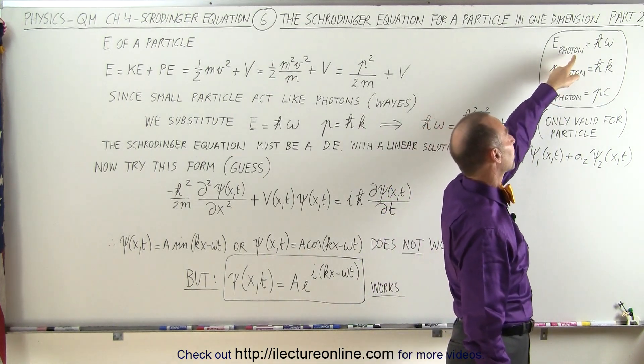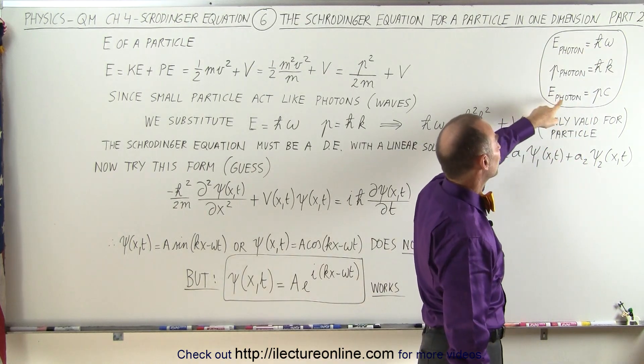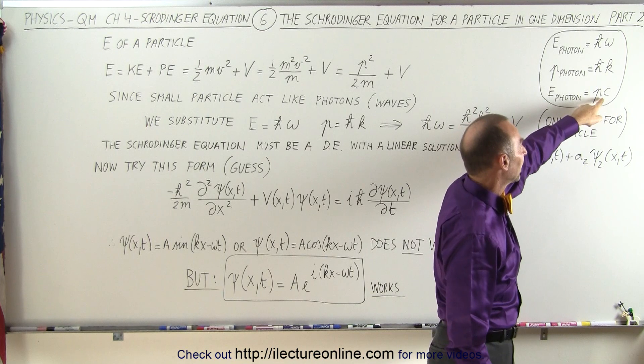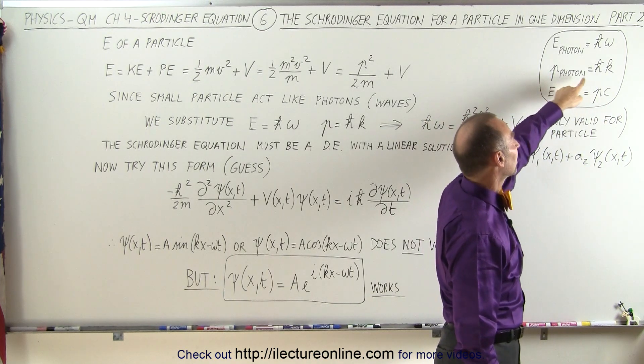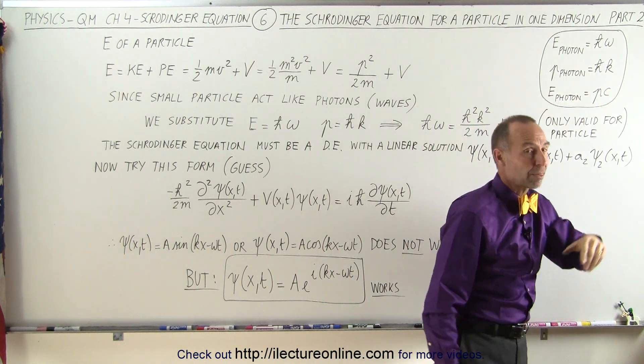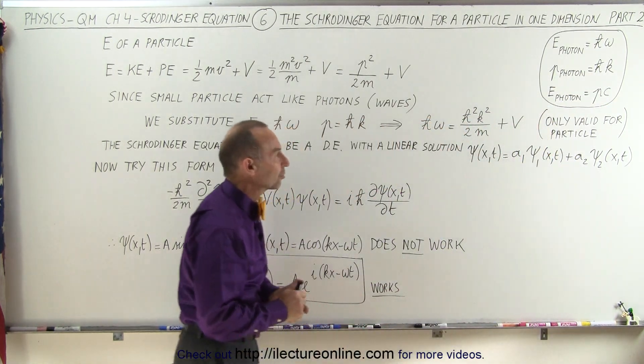Energy of a photon can be written as h-bar times omega, which is the angular frequency. The energy of a photon can also be written as the product of the momentum and the speed of light, and the momentum of a photon can be written as h-bar times k. Remember, h-bar is h divided by 2π, h being Planck's constant.